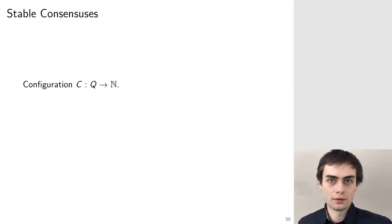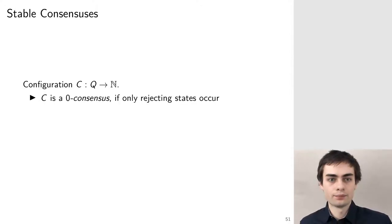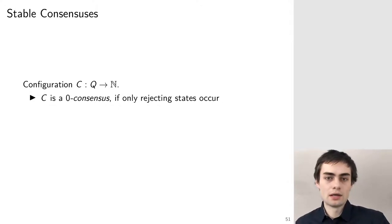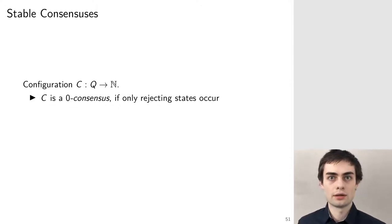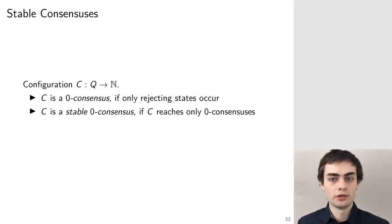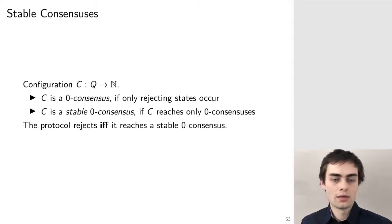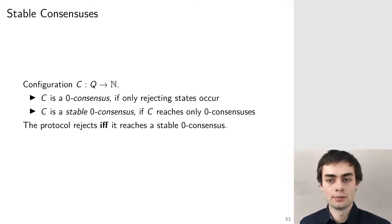Now let's talk about stable consensuses. A configuration is a mapping from states to natural numbers assigning each state a number of agents. We say such a configuration is a zero consensus if there are only rejecting states in it. We further say it's a stable zero consensus — or stable rejecting consensus — if it's only possible to reach zero consensuses from that configuration, meaning all agents are rejecting and no agent can change their opinion. A population protocol rejects an input if and only if it can reach a stable rejecting consensus.